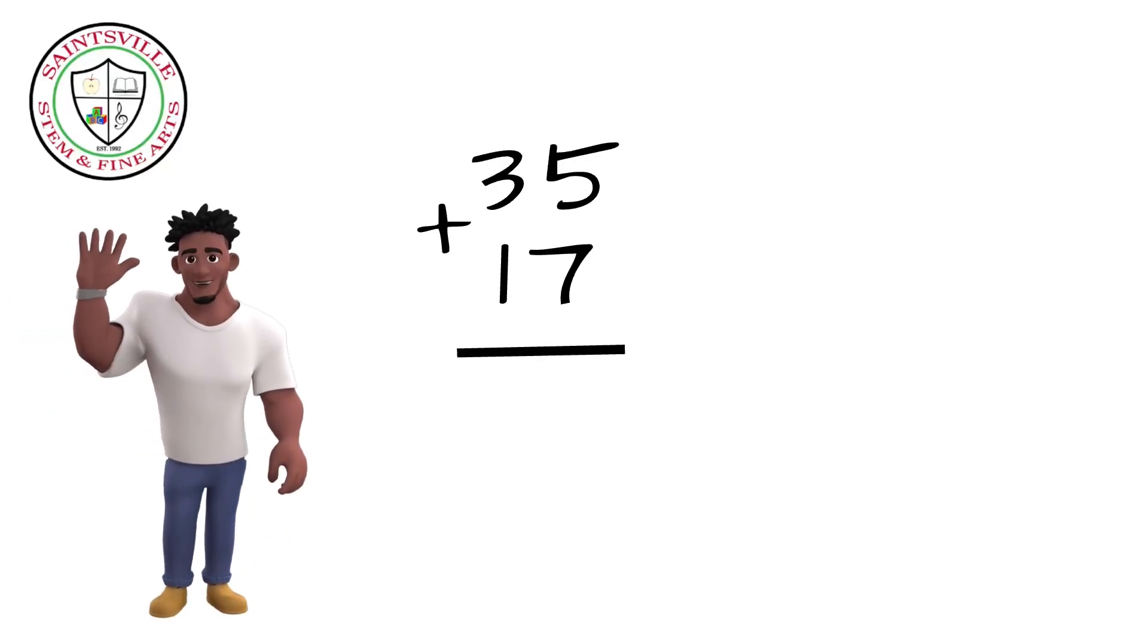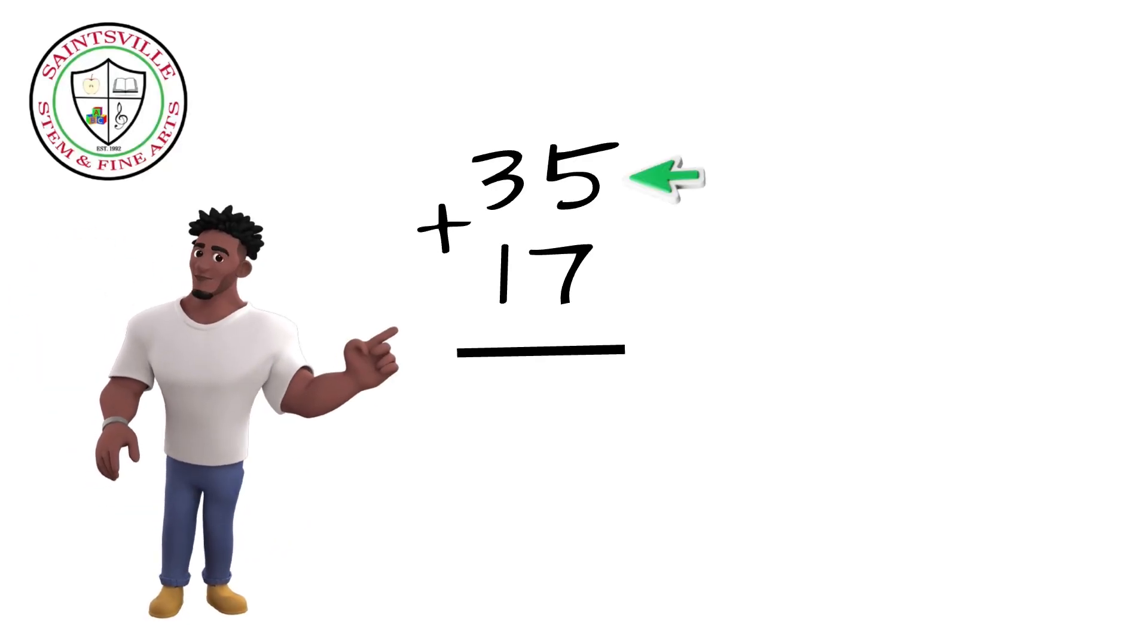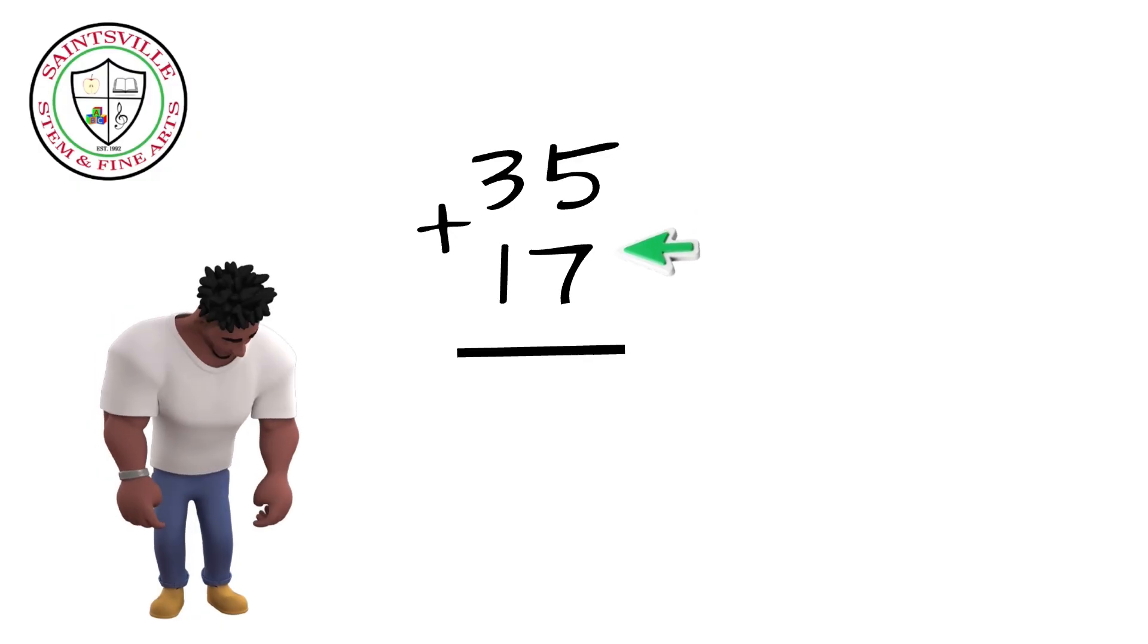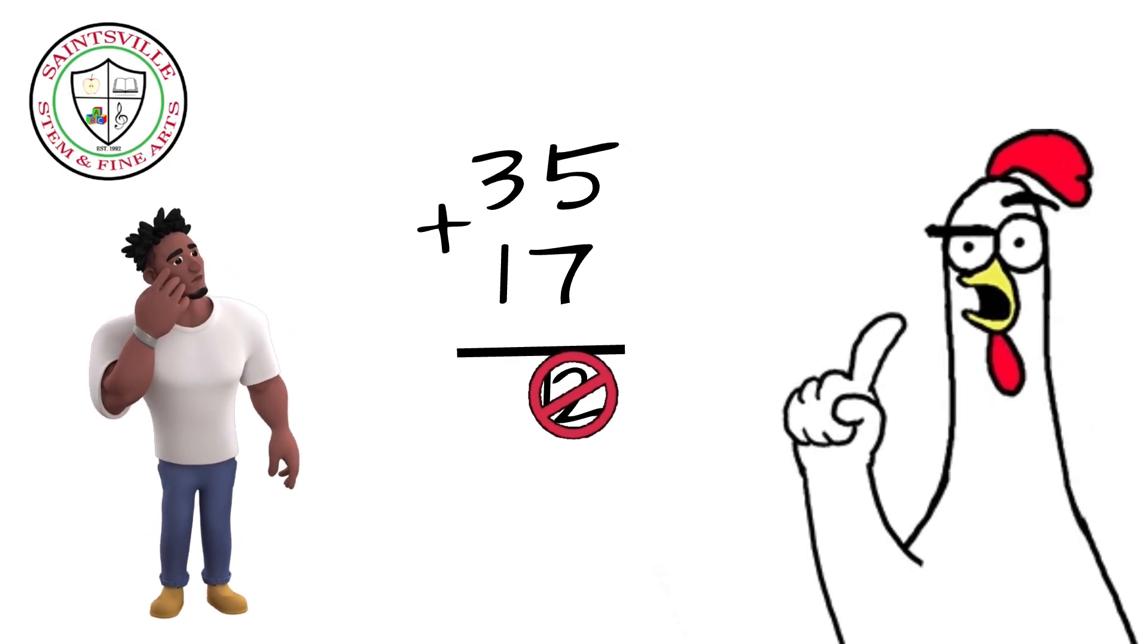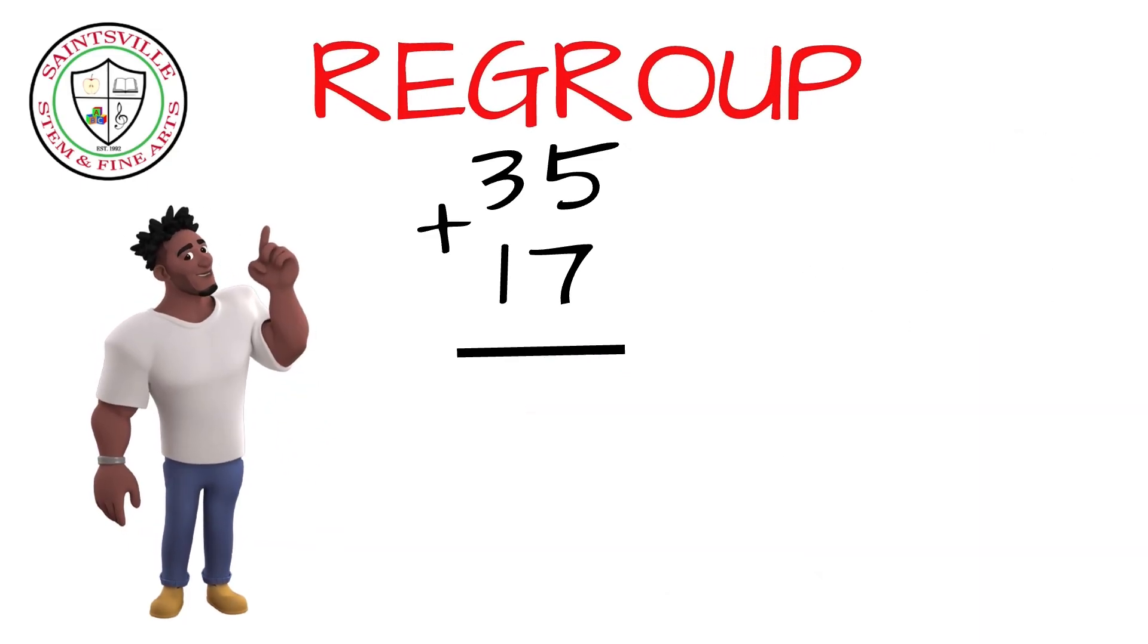Hey, what do I do when I'm adding with place value and the digits in a column like 5 and 7 equals more than 9? Oh no! Wait, I remember. I have to regroup.